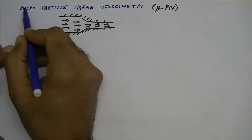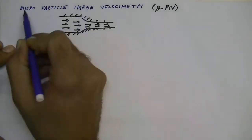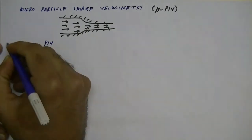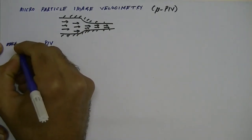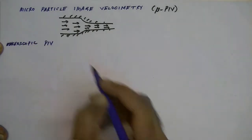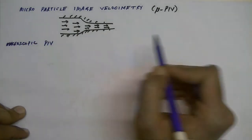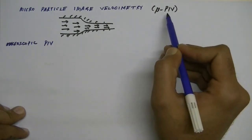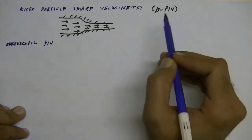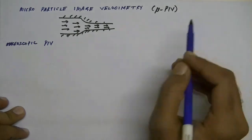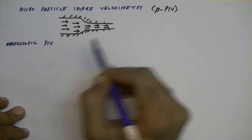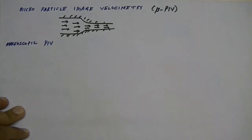Micro PIV is basically an adaptation of the macroscopic PIV technique which was well known before micro particle image velocimetry came into picture. The basic principle of micro PIV and macroscopic PIV is the same, but there are lots of differences in how you do micro PIV experiments in practice. In this lecture we are just going to look at the basic principle, and in subsequent lectures we'll see how we can adapt this PIV technique to microfluidic flows.